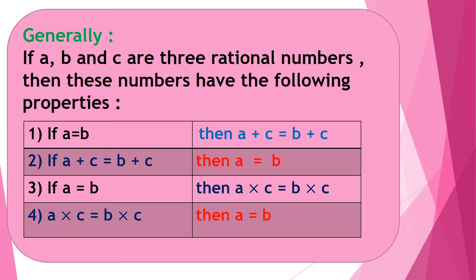Generally, if a, b, and c are three rational numbers, then these numbers have the following properties. If a equals b, then a plus c equals b plus c. And conversely, if a plus c equals b plus c, then a equals b.